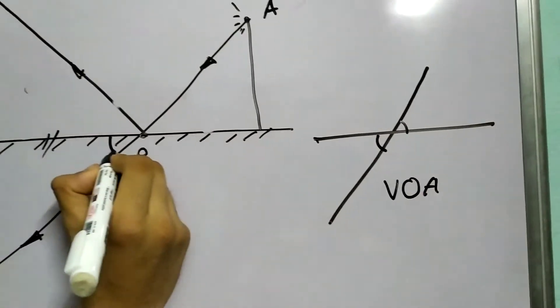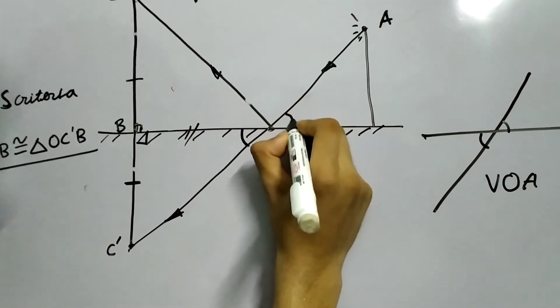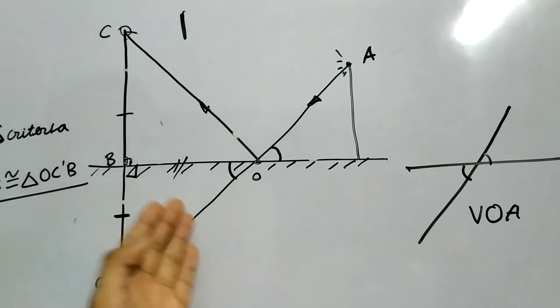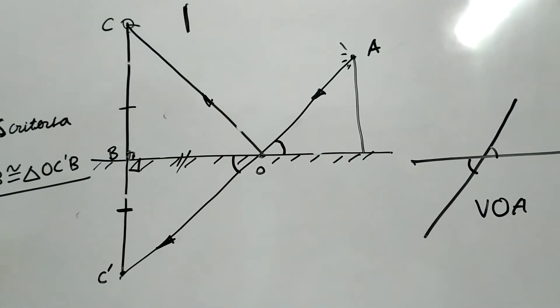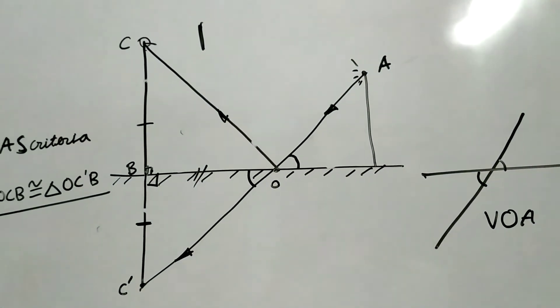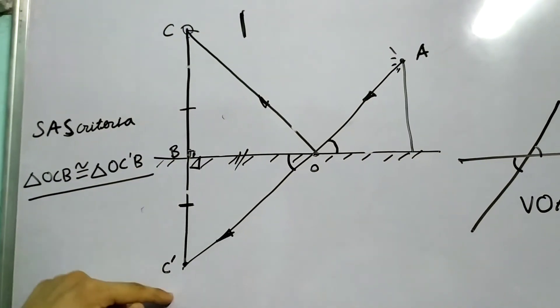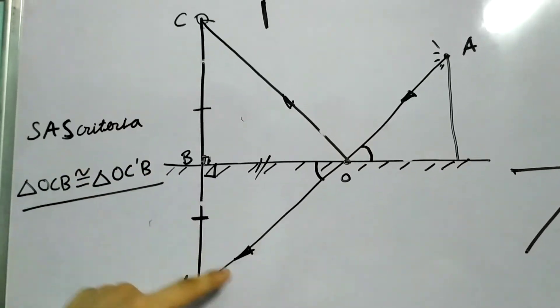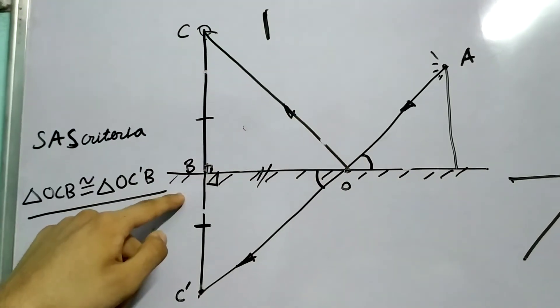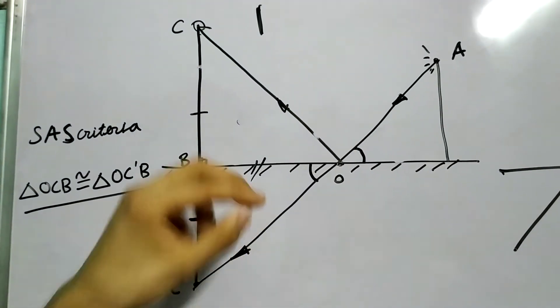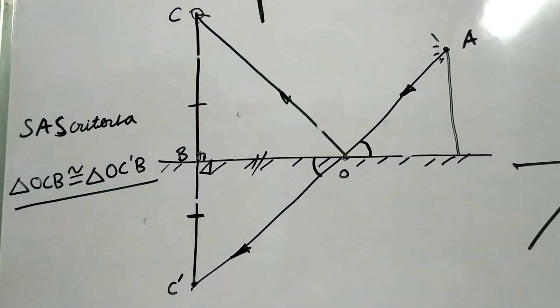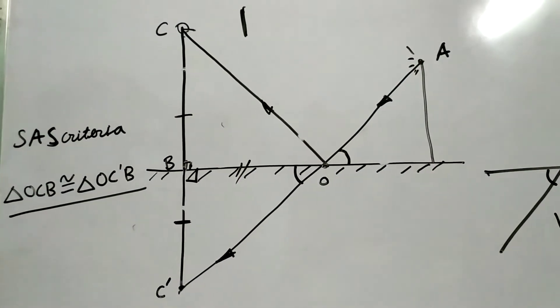Now, this angle B equal to this one, right over there. Vertically opposite. So what can we do? Now, a minute ago, we just proved these two triangles are equal, right? OC'B. This triangle is congruent to OCB. What can we say about these two angles? Well, these two angles, of course, must be equal, right?